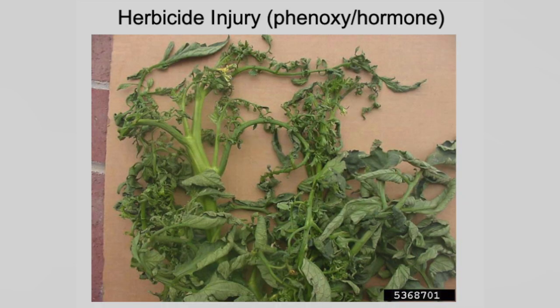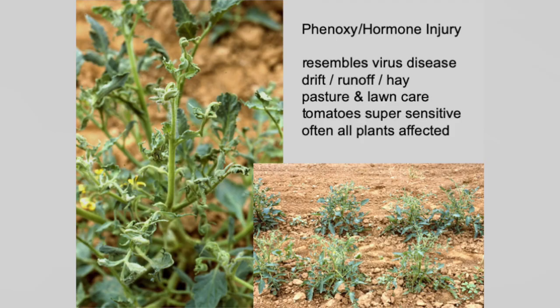A lot of times this is out of our control. We've got more cattle in Oklahoma than we've got people, and the ranchers are spraying herbicide on a lot of this pasture land to get all the broad leaves out. That stuff moves around and tomatoes are super sensitive. If your tomatoes start twisting up like this and they're all doing it — not just one or two, all of them — that's phenoxy herbicide injury from lawn care or pasture. It often affects all the plants and goes to the new growth; it looks a lot like a virus.